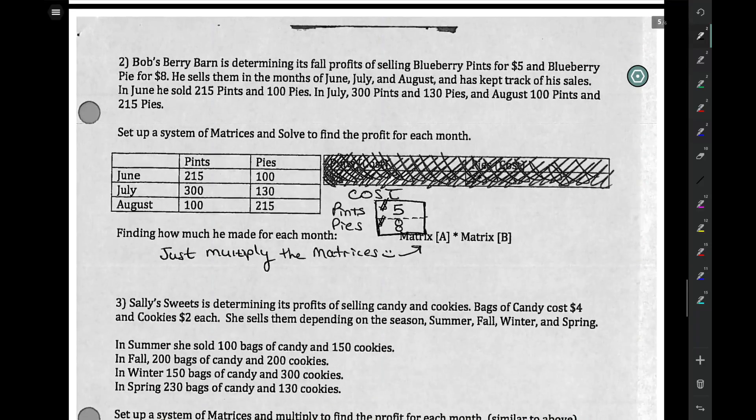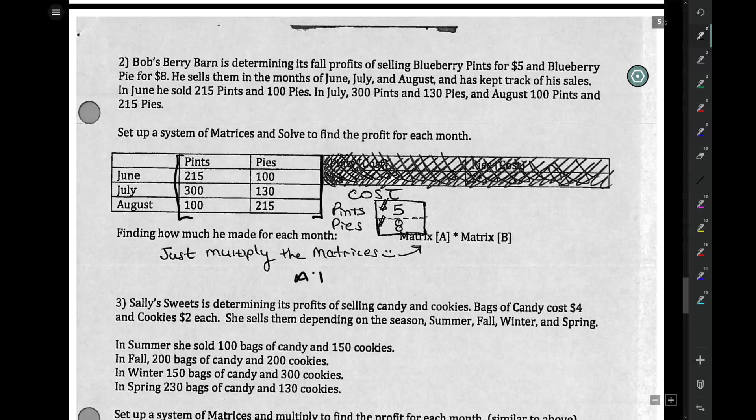Lastly, Bob's Berry Barn. These ones here, again, getting used to the matrices. All you're doing, and I kind of scaffolded here for you, is multiplying the matrices, A times B. Here's matrix A. That is matrix B. You just multiply the two. And what it gives you is for June, July, and August, the money you make.